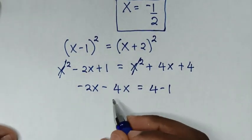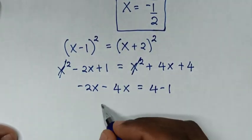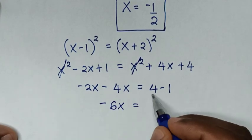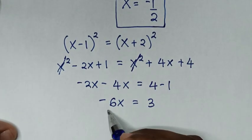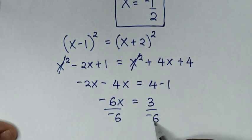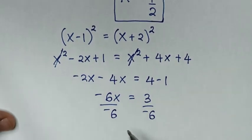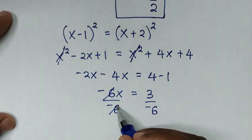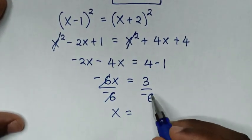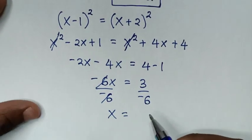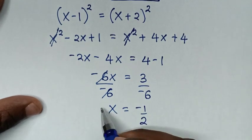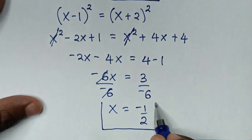Negative 2x minus 4x equals negative 6x, and 4 minus 1 equals 3. Dividing both sides by negative 6 gives x equals 3 divided by negative 6, which is negative one half. Therefore x equals negative one half is the final answer.